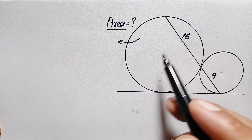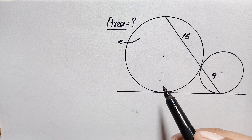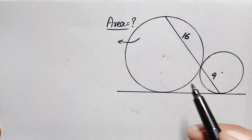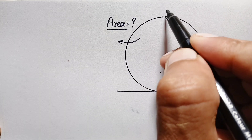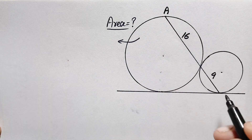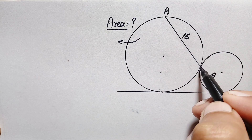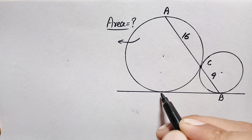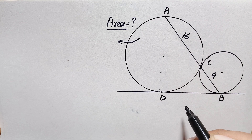To find the area of the bigger circle, we know that the area is π r², so we need the radius of the bigger circle. To find the radius, we will do some steps. First of all, let us give names to the points: this is point A, this is point B, this is point C, and this is point D.